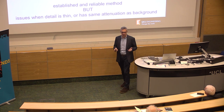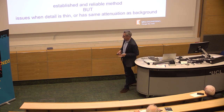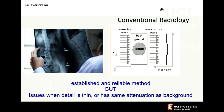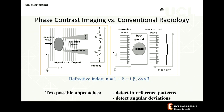This is conventional radiology: you've got something inside something else that you want to see — be that a tumor in tissue or an inclusion in a material. If you're lucky, this object stops more or fewer x-rays than the surrounding background, then you've got some signal. However, if the attenuation of what you want to see and the background are very similar, or if the detail becomes very thin, then that thing will disappear and you won't be able to see it. That's when you might want to use phase contrast imaging.